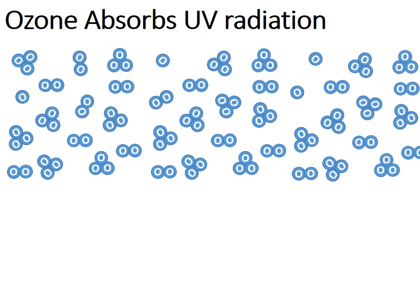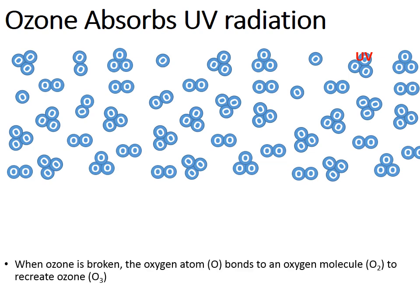The ozone layer absorbs UV radiation, but it's not really just an ozone layer — there's more than just ozone. There is O3 (ozone) in the ozone layer, there's also O2 (the oxygen that we breathe), and there's also just regular single oxygen atoms. Here comes a UV photon that strikes an O3 molecule. The UV light will cause that O3 to be broken apart. But notice what happened — that single oxygen atom bonded with an O2 to recreate a molecule of ozone.